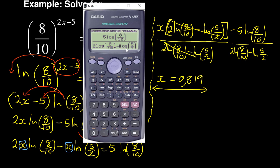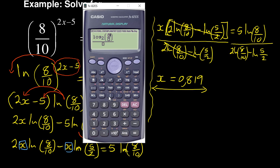With logarithms the assumption was base 10, but you can choose any base. If you work with base 2, you put your 2 and enter the fraction 8/10 — everything in base 2 — and your answer will still be the same: 0.819.